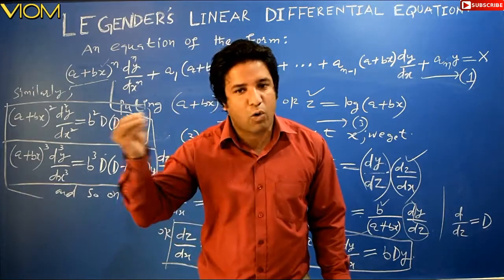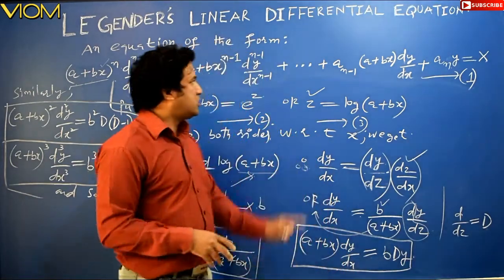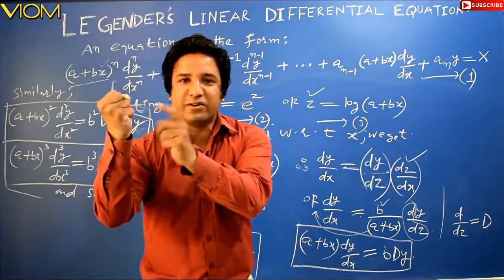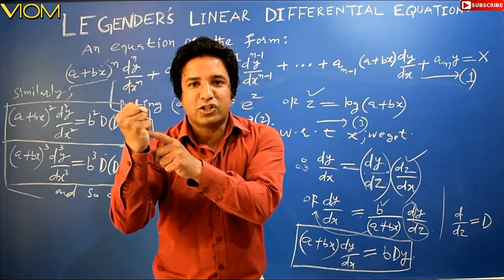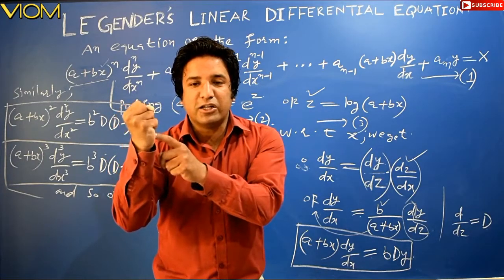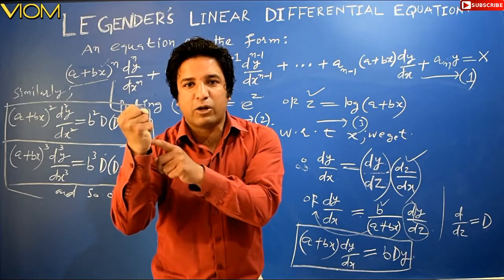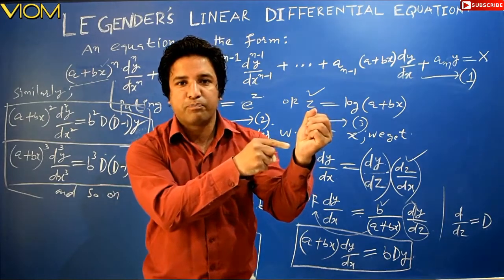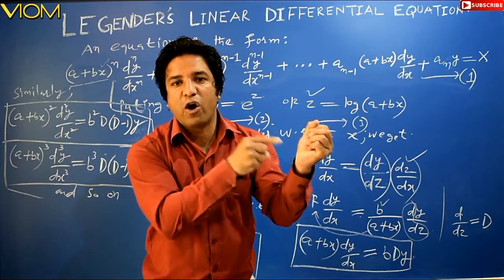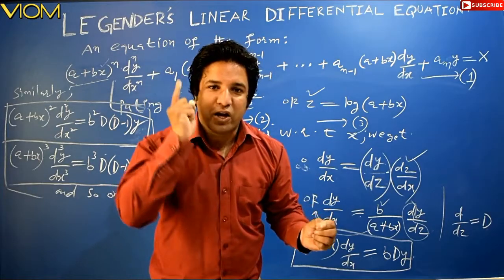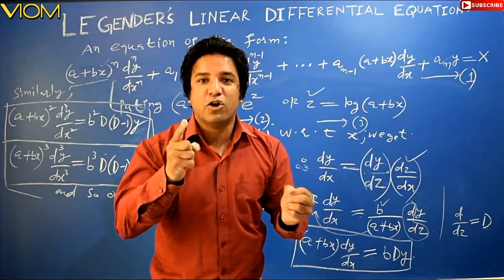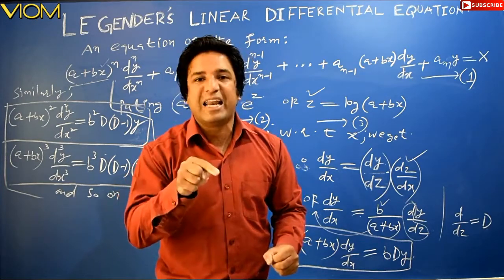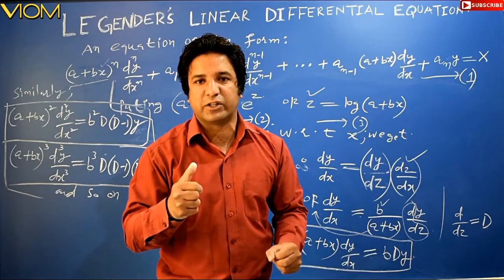Substituting all these elements into Legendre's Differential Equation number 1, this equation — which contains variable coefficients — is transformed into a Linear Differential Equation with constant coefficients. That is the beauty of this lecture. The next lecture will cover numericals based on Legendre's Linear Differential Equation. Thank you.